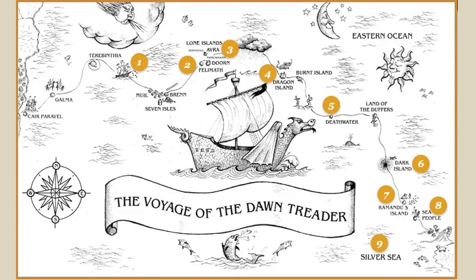Their next destination is the land of the Duffers. What do we know about the Duffers? They're invisible, and they bounce — you can recognize them by the thumping sound. Why do they bounce? Because they only have one foot. They're called monopods. They're dwarfs, and they've been turned into this condition by a magician who lives on the island named Coriakin. They believe Coriakin has uglified them by turning them into monopods, but he did that so they could be more effective at their work — primarily gardening. They're trapped in groupthink, agree with everything their leader says.